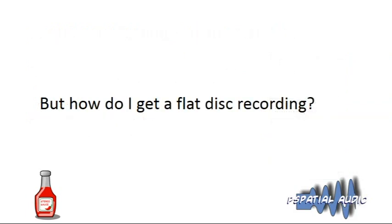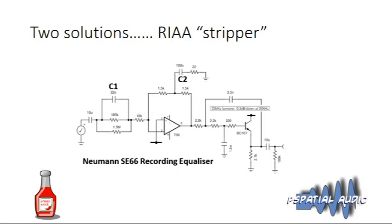This raises the question: how do you get a flat disc recording? Most disc preamplifiers implement RIAA. The first solution is to use a filter built into Stereo Source called an RIAA stripper, which uses a reverse characteristic to take an RIAA-equalized pickup response and strips off that equalization, leaving you effectively what the signal is coming out of the groove. The algorithm uses the transfer function of a Neumann SE66 recording equalizer.